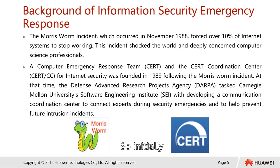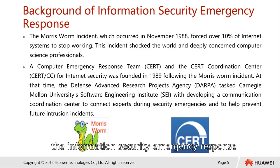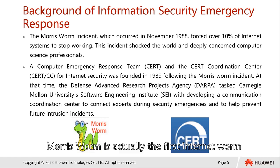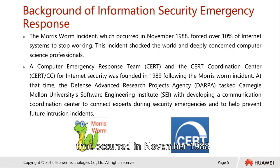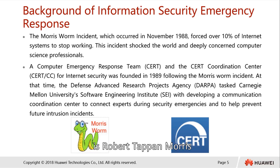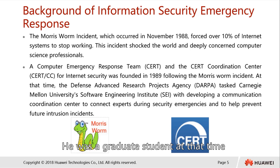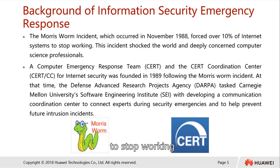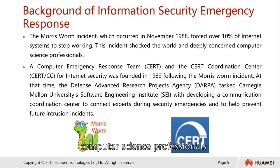The information security emergency response initially occurred due to an incident known as the Morris Worm incident. The Morris Worm is the first internet worm, occurring in November 1988. It came from Robert Tappan Morris, who was a graduate student at the time. This Morris Worm forced over 10 percent of internet systems to stop working, shocking the world and deeply concerning computer science professionals.